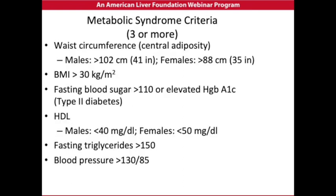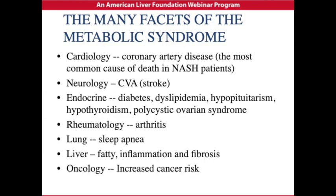Fatty liver disease is also associated with the metabolic syndrome. People with the metabolic syndrome have at least three of the criteria shown on this slide. These include central body fat, high BMI, diabetes, low levels of good fat, and high blood pressure. The most important thing to know is that metabolic syndrome is associated with coronary artery disease, which is still the most common cause of death in patients with NASH. Other significant problems include diabetes, sleep apnea, and an increased risk for cancer.